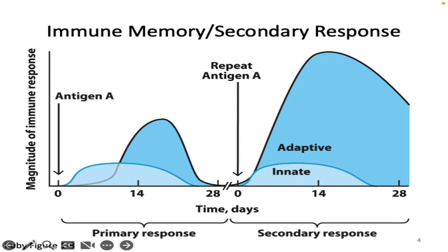We've also known for a long time that our adaptive immune responses change over time. The first time through, we have an antibody response with a little delay, and we make a response. The second time we are exposed to that same antigen, we're going to have a larger and faster response. Somehow we have to retain the information that we've previously seen this microbe, so there has to be some kind of long-term memory involved.